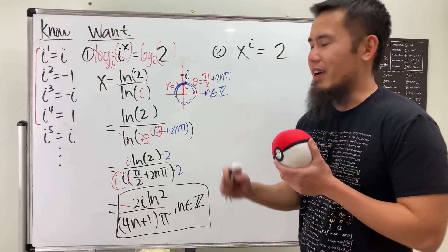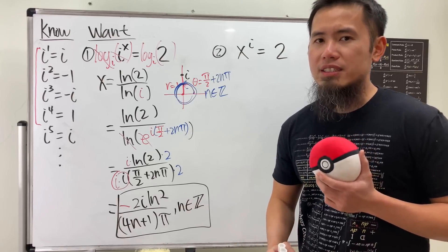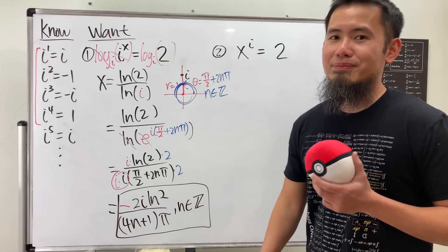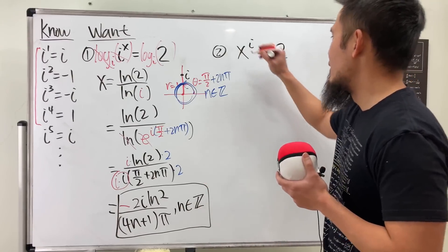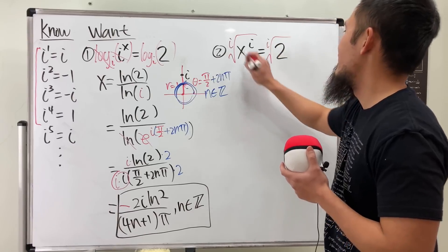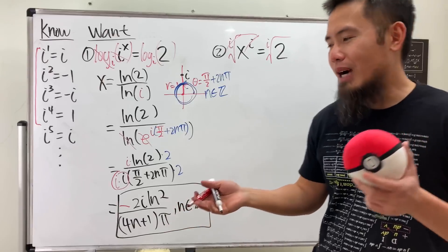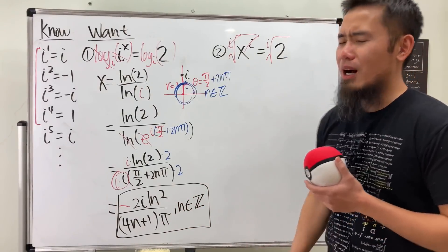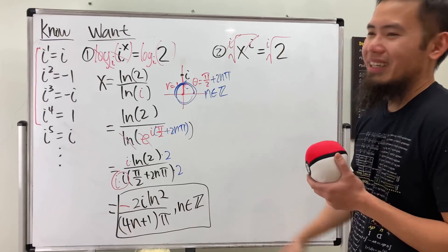Now, if you take a look at the second one, x to the i's power is equal to 2. My question for you guys is that, do we need to use logarithm? No. This time, we just need to use the root. So let me actually write it as the i-th root on both sides, because this way, that and that will cancel. Yes, I know I could have just written it as the 1 over i's power, but I think the i-th root, it looks so much cooler.